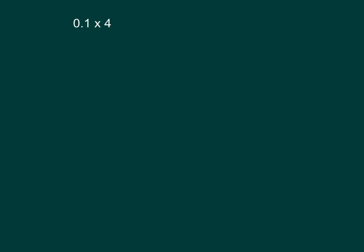Write this expression as a multiplication sentence using a fraction and solve. We have the fraction one-tenth times four equaling four-tenths. Four-tenths written as a decimal is 0.4, so 0.1 times four does equal 0.4.